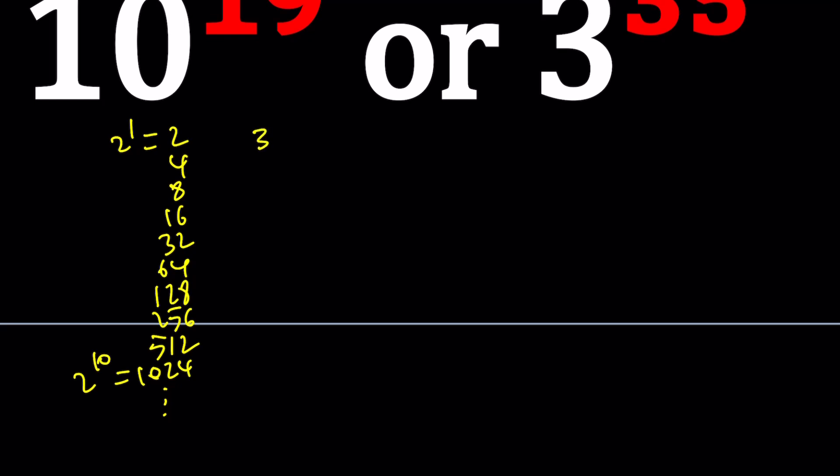And then powers of 3 are going to be 3 to the 1st, and then 9, 27, 81. Obviously they're going to grow faster, right? And then we'll have 243, 729, 2,187, so on and so forth. They're going to get bigger quickly.